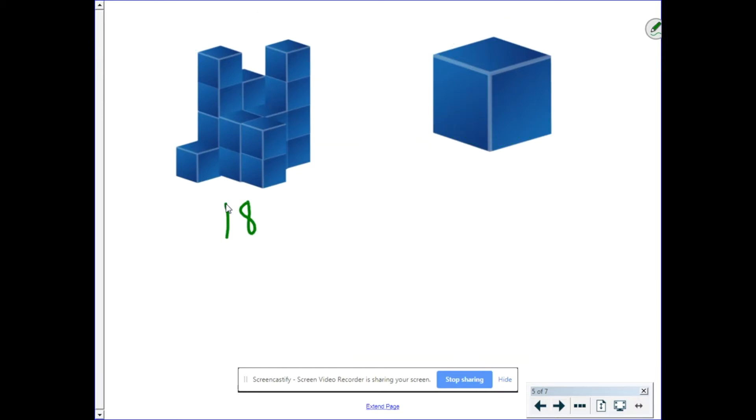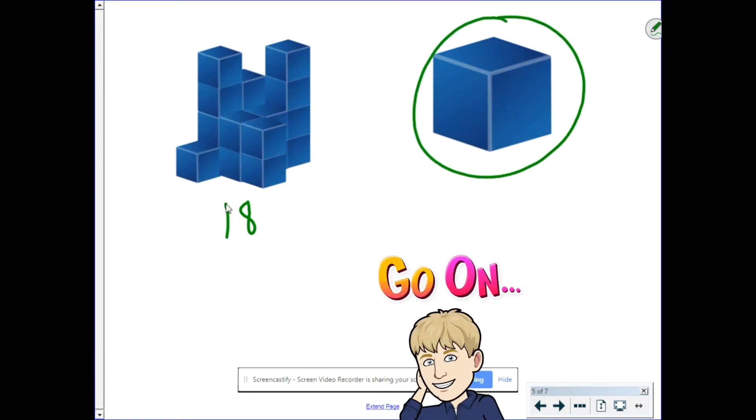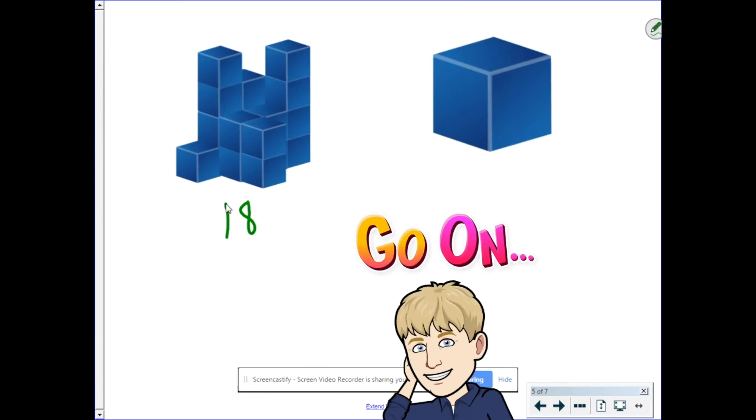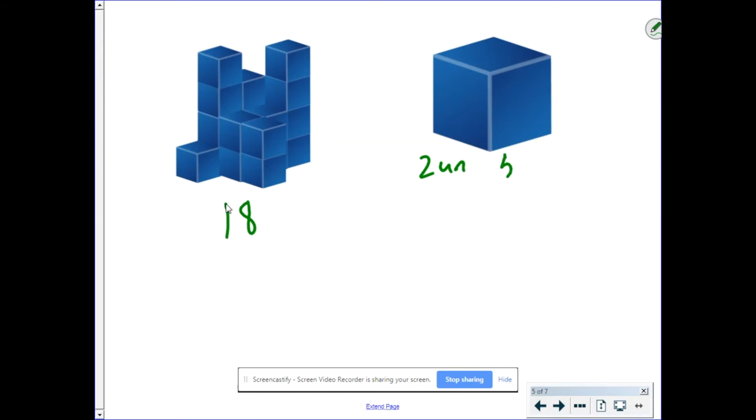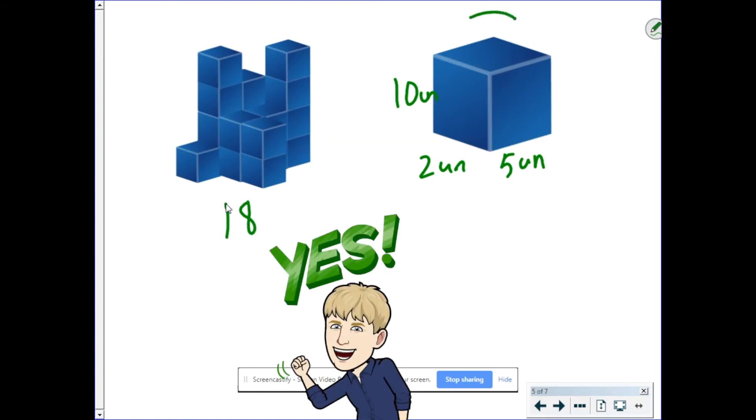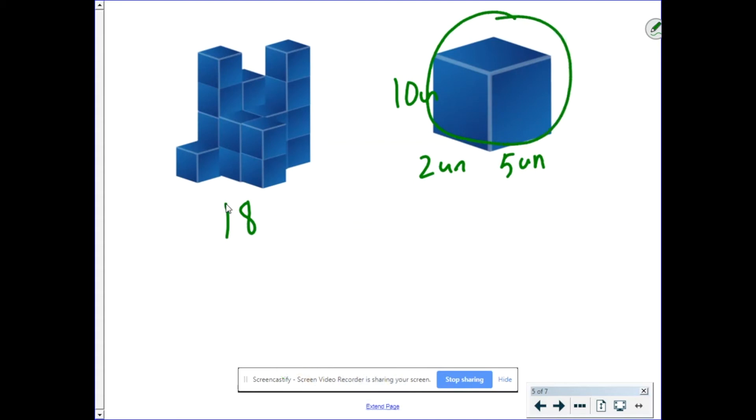But what if they change each side length by a different amount? I know this is a cube, so all side lengths are equal. But for this example, let's pretend that it's just a regular old rectangular prism where my length is two units, my width is five units, and my height is 10 units. What do we do now? Well, the same principle applies. We find the volume of this individual rectangular prism and then multiply it by how many I have. 10 times two is 20. 20 times five is 100. So each rectangular prism is worth 100 cubic units. So I multiply that by my 18 rectangular prisms and I end up with 1,800 cubic units.